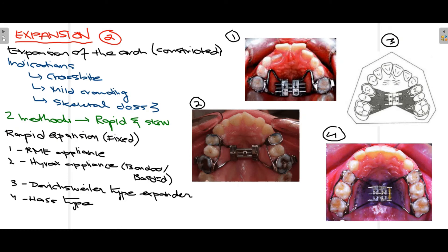The second method used to gain space is arch expansion. Expansion is performed to expand the arch, which in most cases is constricted, causing space deficiency. There are three basic indications: firstly, crossbite — that is, abnormal labiolingual relation of the teeth; secondly, mild crowding; and thirdly, skeletal Class III malocclusion in which the mandible is prognathic and the maxilla is retrognathic.